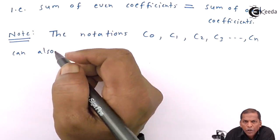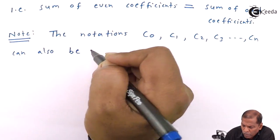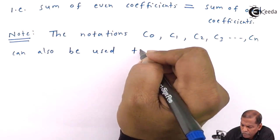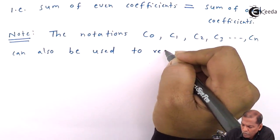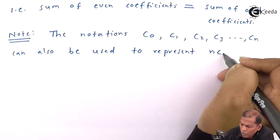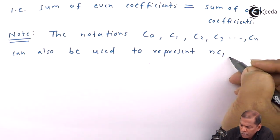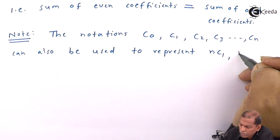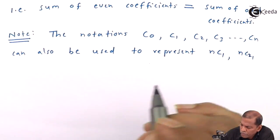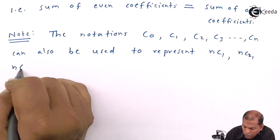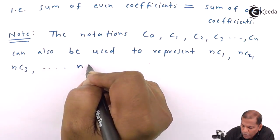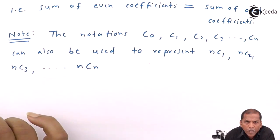can also be used to represent nC0, nC1, nC2, nC3 up to nCn.